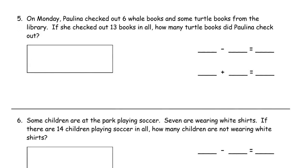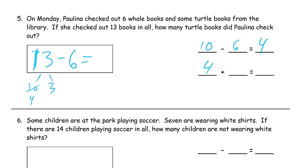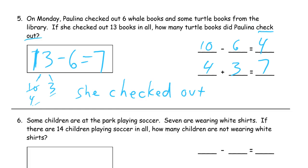On Monday, Paulina checked out six whale books and some turtle books from the library. If she checked out thirteen books in all, how many turtle books did she check out? We know that the whole is thirteen. Thirteen is ten and three. Ten minus six is four — there's only four left of that ten after we subtract the six. And we just add these two parts back together: four plus three is seven. She checked out seven turtle books.